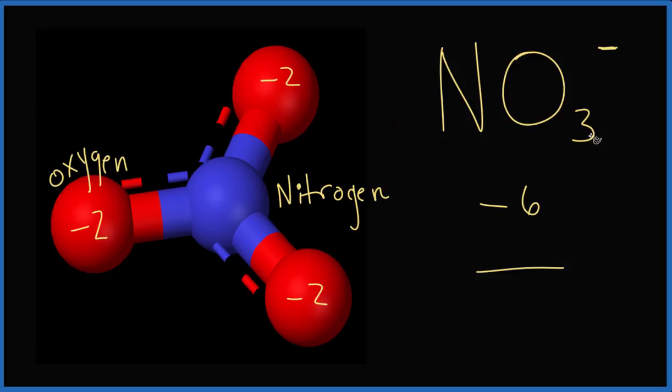We know our total charge needs to be minus one. So minus six plus something gives us minus one. Well, minus six plus five, that gives us minus one.